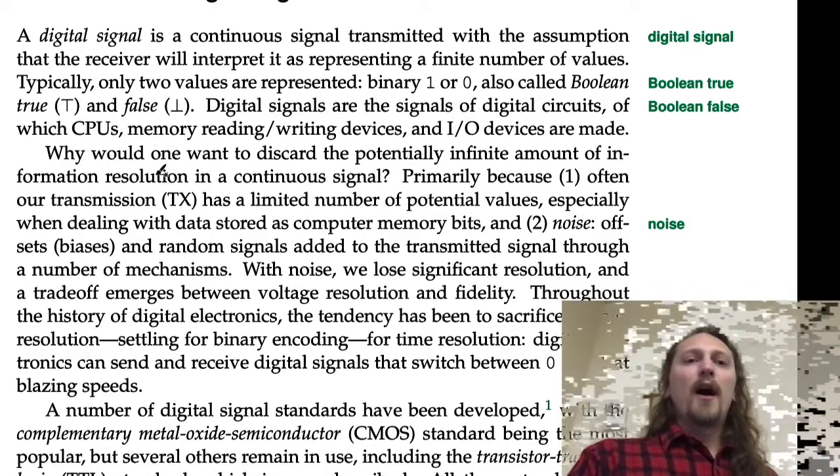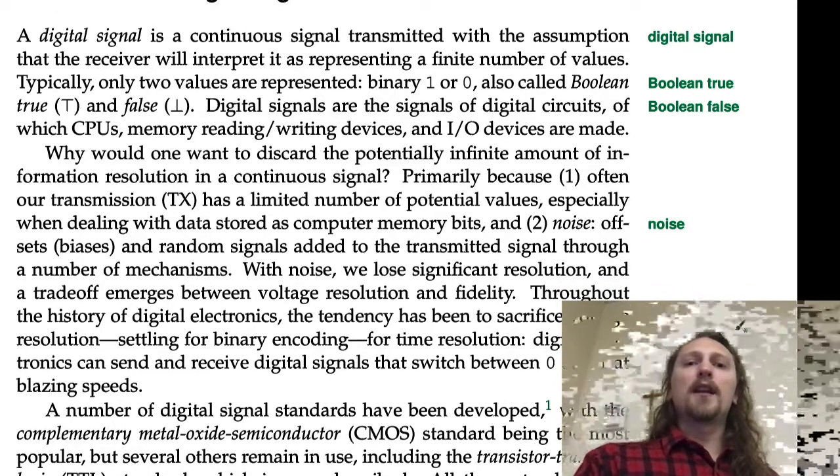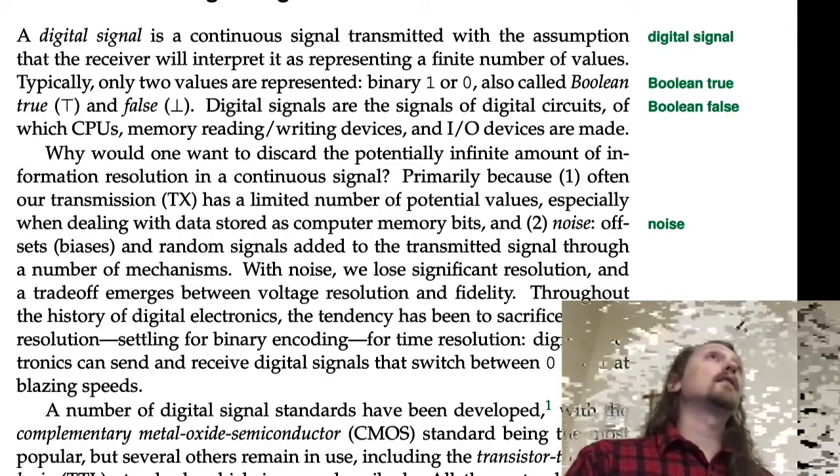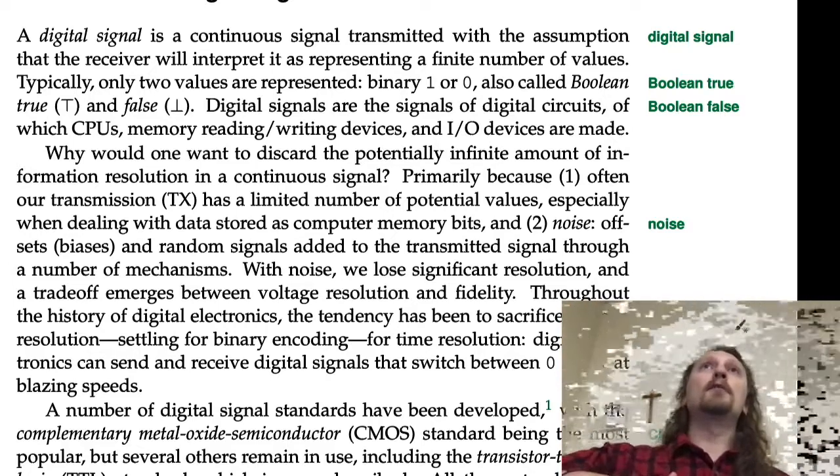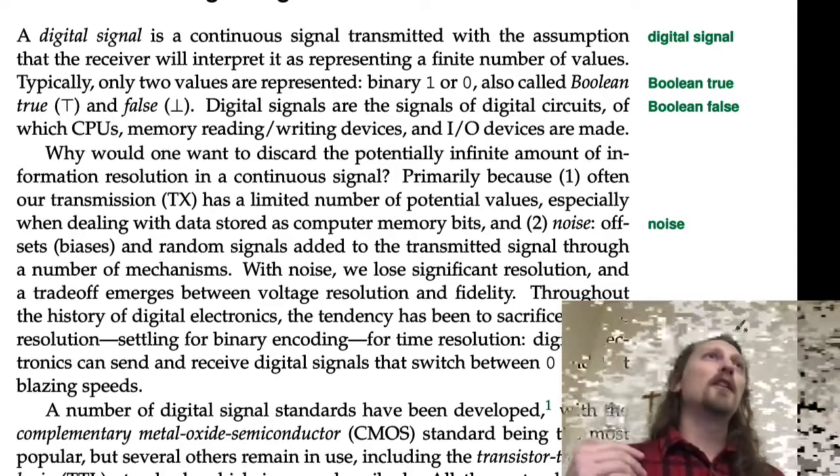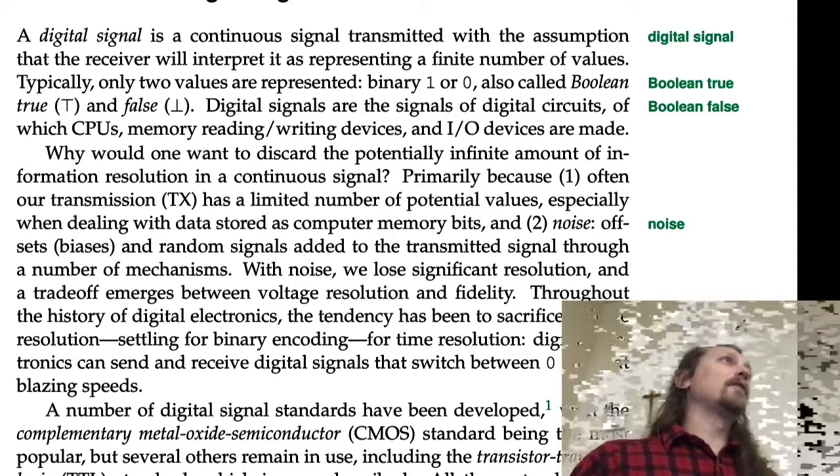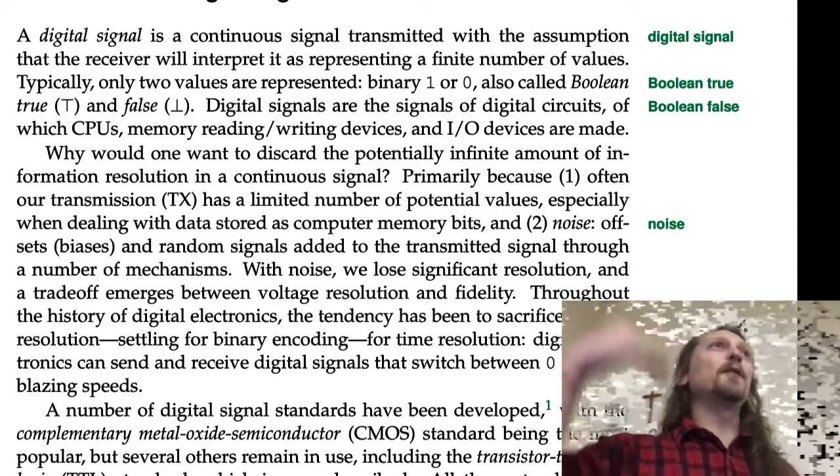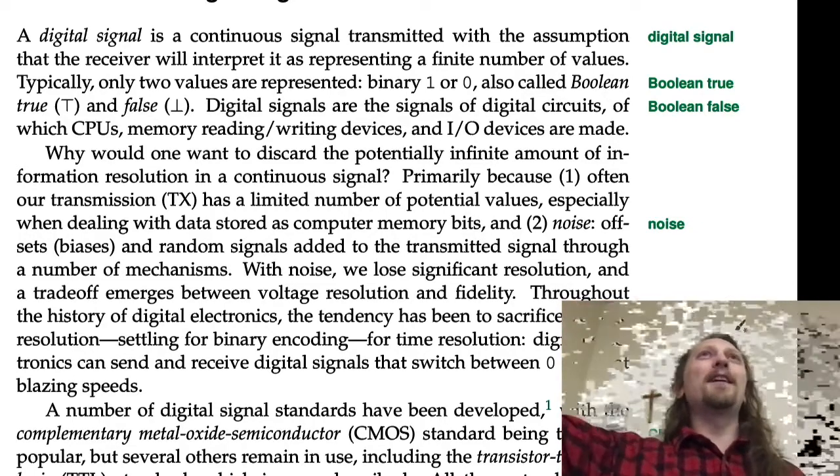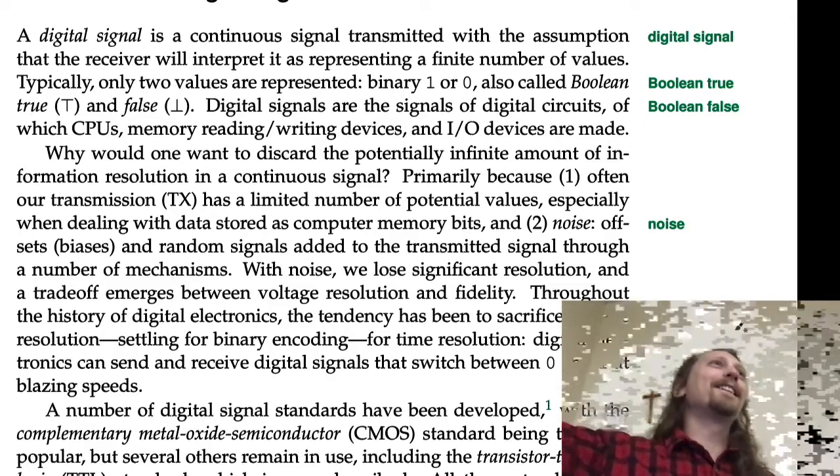Why would one want to discard the potentially infinite amount of information resolution in a continuous signal? Assuming that an analog signal could take on any real number in its range, there are an infinite number of real numbers between any two real numbers—infinite amount of information. Why would we want to give that up? I mean, it's amazing, right?